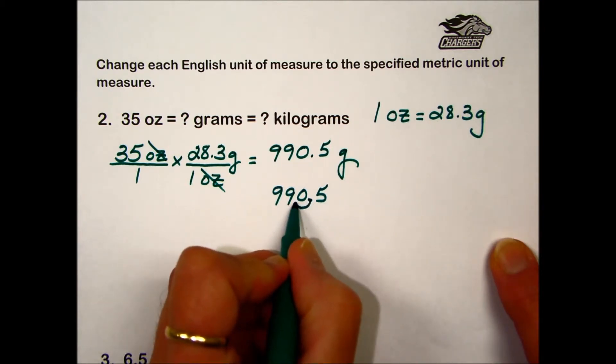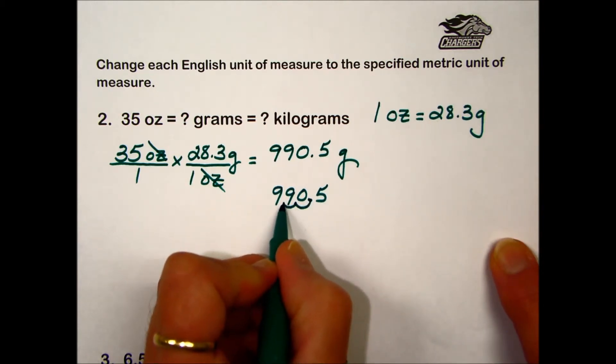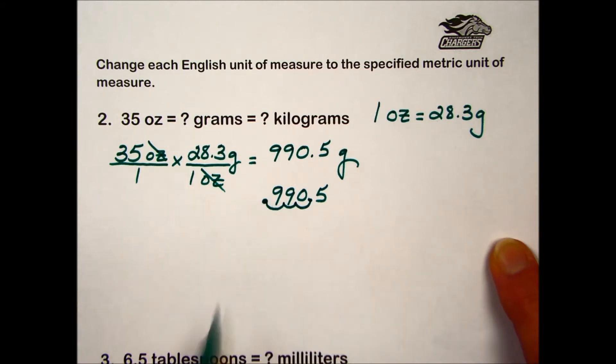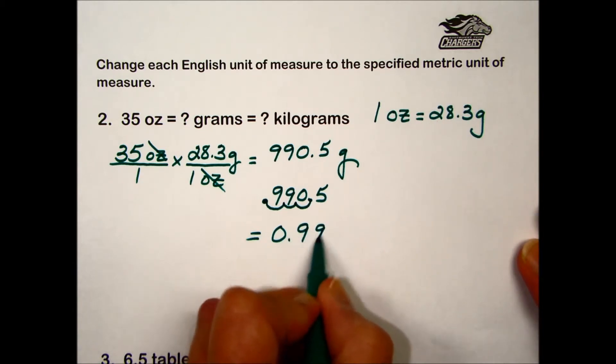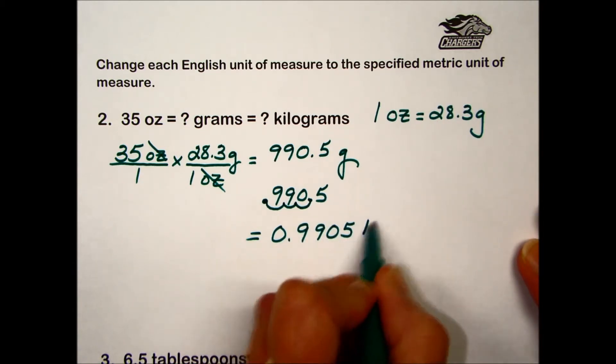Or 3 decimal place moves to the left on our current gram measurement. So we will take the 990.5 and move that decimal 1 to the left, 2 to the left, a total of 3 place values to the left to have an equivalence in kilograms. So to answer our second question, we will answer 0.9905 kilograms.